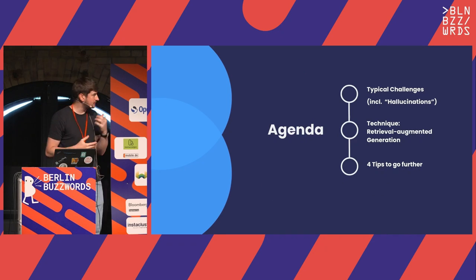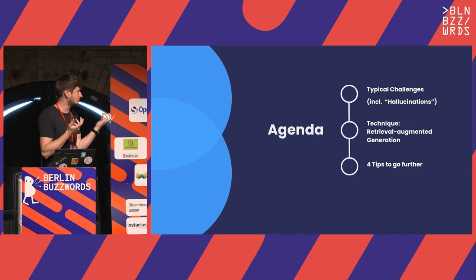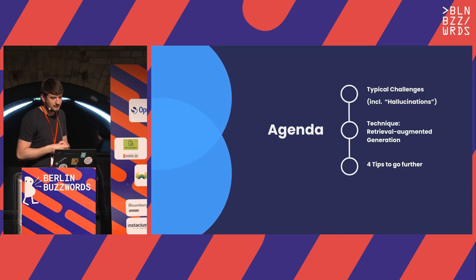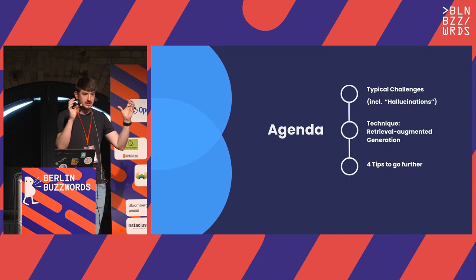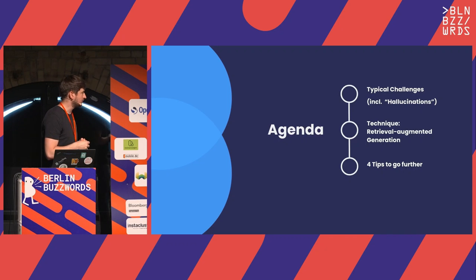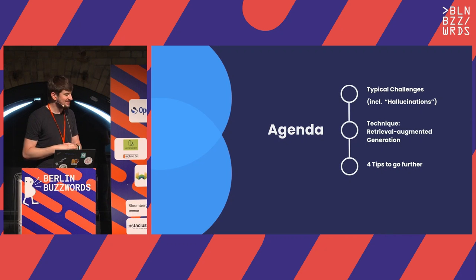What can you expect in the next 30 minutes? I'll structure my talk into three parts. First, I give you some background on typical challenges when moving LLMs to production, focusing on quality, ensuring the model really works, and fighting hallucination. Second, I'll introduce one key technique that every developer in that space should have in their toolbox. And third, I'll share some further tips on what you can do beyond that one method. In the middle there will also be a live demo and live coding.